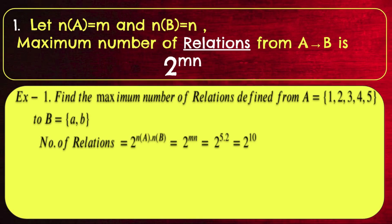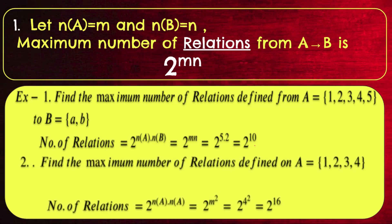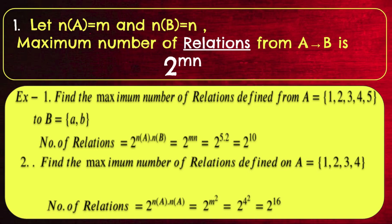An example: find the maximum number of relations defined from set A = {1,2,3,4,5} to set B = {a, b}. Here A contains 5 elements and B contains 2 elements. The number of relations is 2 raised to N(A) × N(B), that is 2 raised to MN, which is 2 raised to 5×2 = 2 raised to 10. Also, the maximum number of relations defined on a set A containing 4 elements (from A to A) is 2 raised to 4×4 = 2 raised to 16.